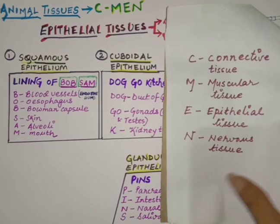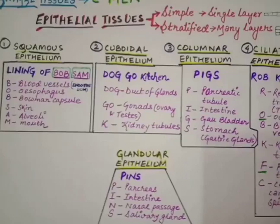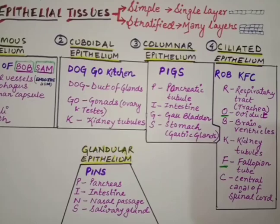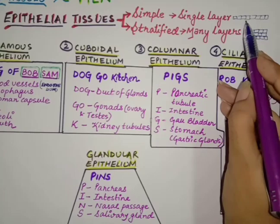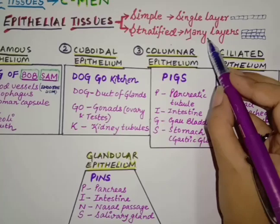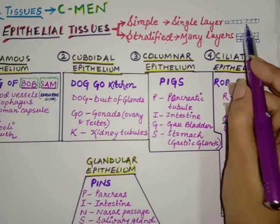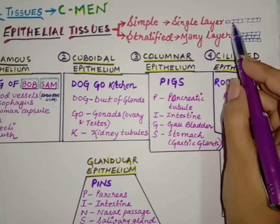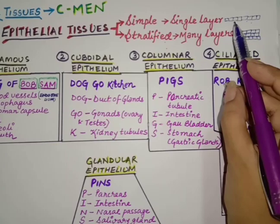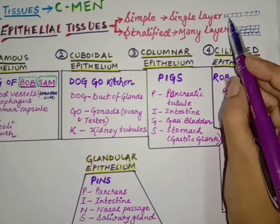Moving on to epithelial tissues, I have divided them into two different types. First is simple — that is a single layer, as you can see here, just a single layer. Next is stratified, which means many layers — you can see there are many layers of cells one after the other. Such an arrangement is known as stratified. Now if you look at the diagram, you can see that there is no gap between the cells. Epithelial cells have no intercellular spaces.